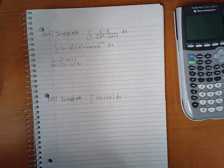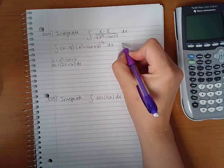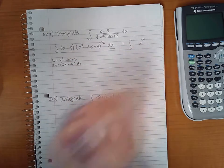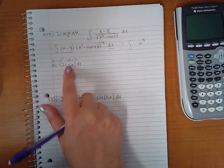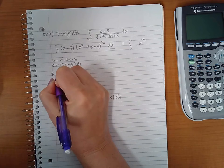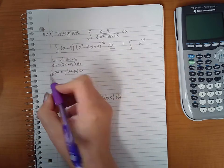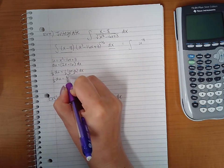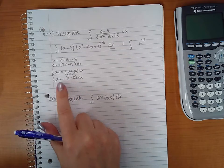We do have an issue though. This would become u to the negative one-half, but this expression times dx is not exactly the same as what I have for du. However, this is basically 2 times that, so I can multiply both sides by a half. Then I have one half du equals x minus 8 dx.